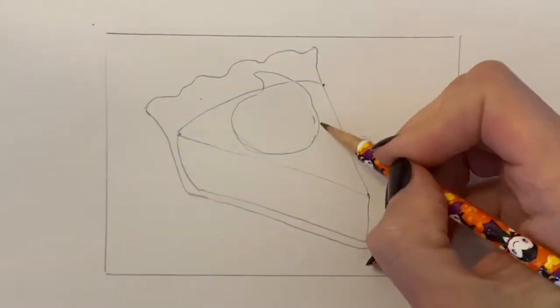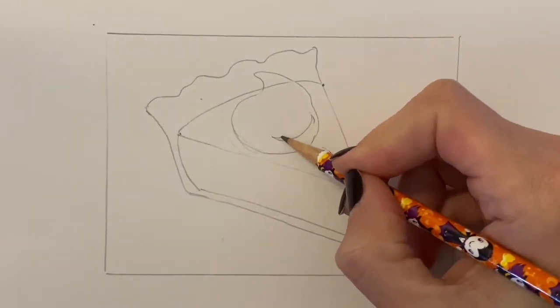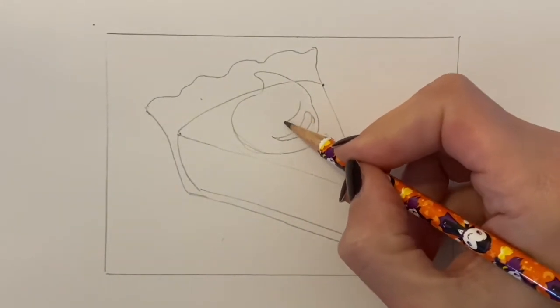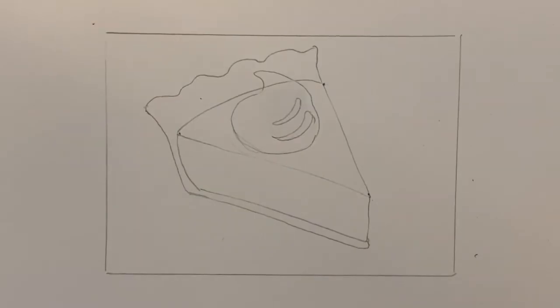And then finally in the whipped cream, I'm going to draw two shapes that are sort of like a crescent moon shape or almost like a Nike swish symbol.